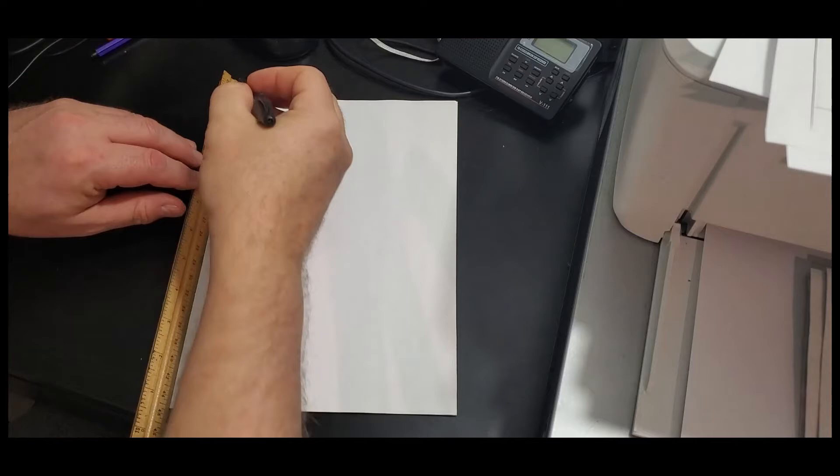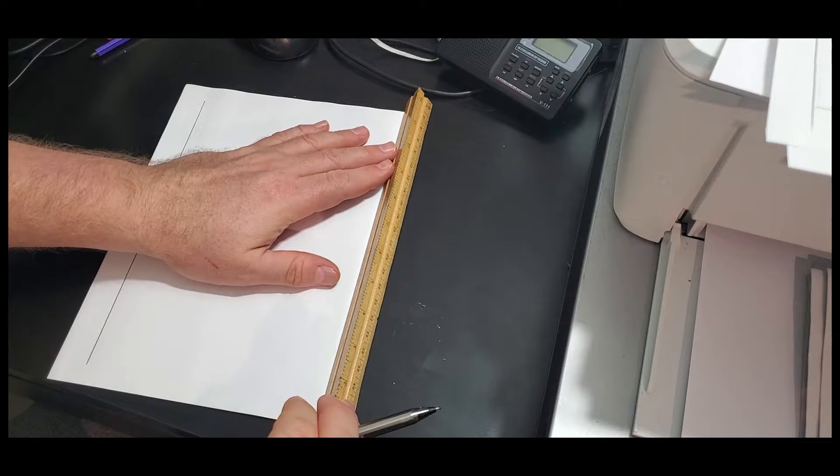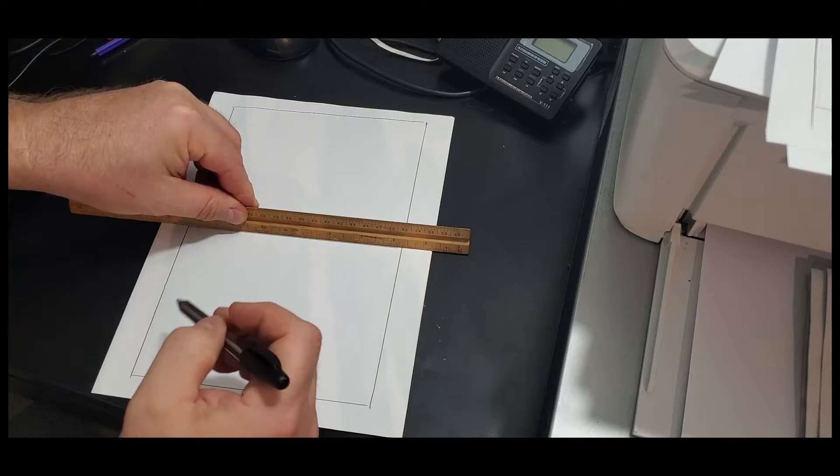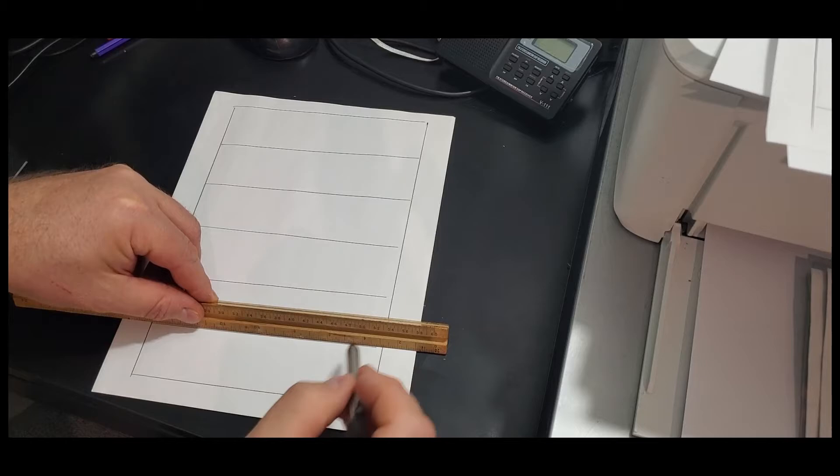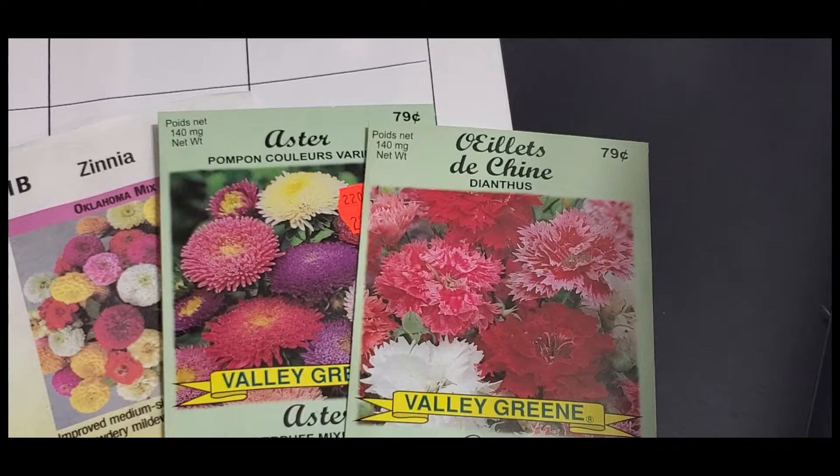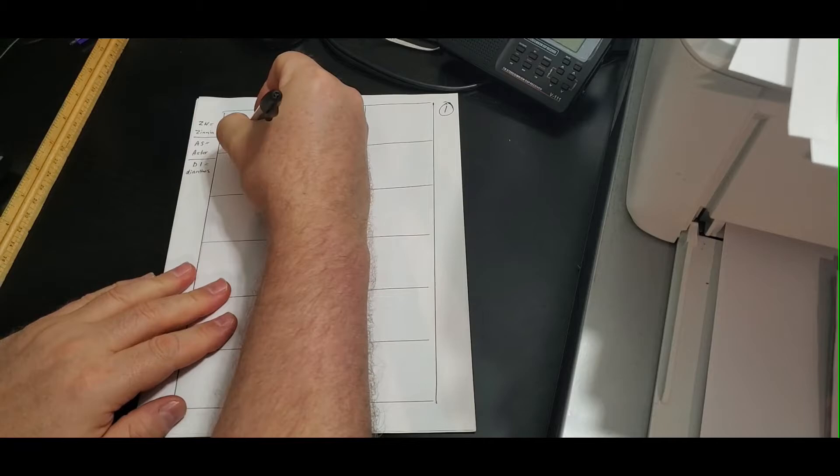Just get an eight and a half by eleven sheet of paper and draw out the grid of whatever tray you're using. I made a little bit of a mistake here when I was demonstrating. I was kind of going too fast. I put the correct number of rows but then I shortened the columns by one, so it should actually have four columns instead of three. It doesn't really matter because the seeds in each row are the same.